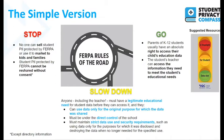For our green light: parents of K-12 students and students in a post-secondary institution or over 18 usually have an absolute right to access their child's education record — or their own record. The student's teacher can access information when they have a legitimate educational need to meet a student's educational needs. All of these high-level principles have many caveats, which we'll talk about now.